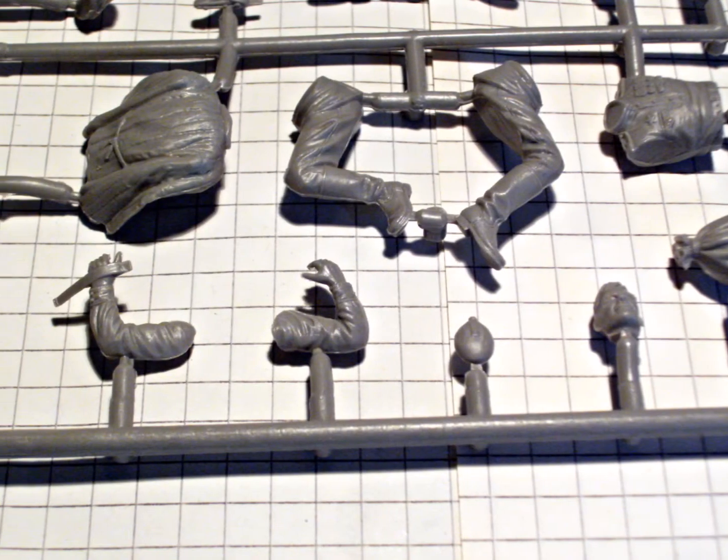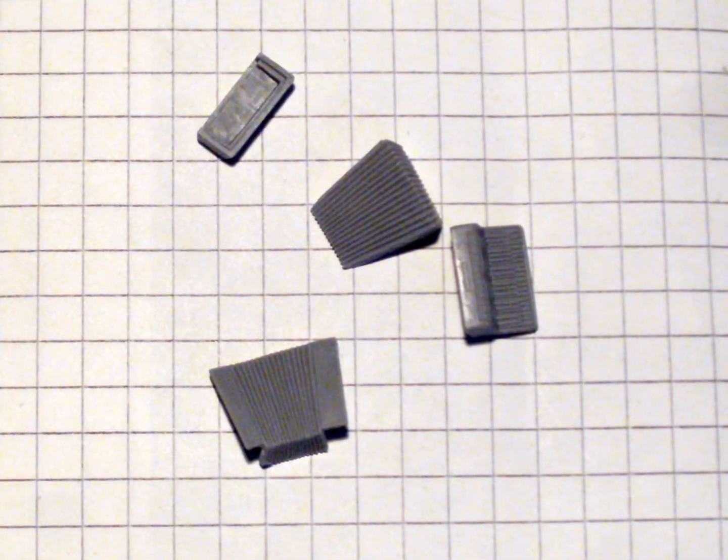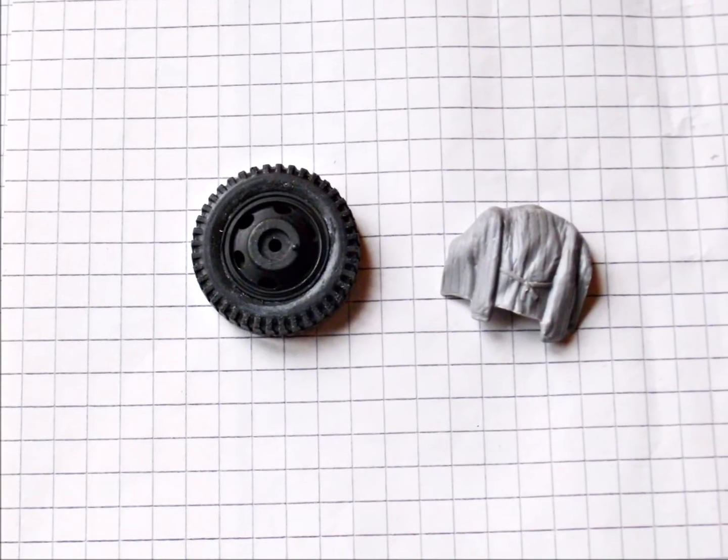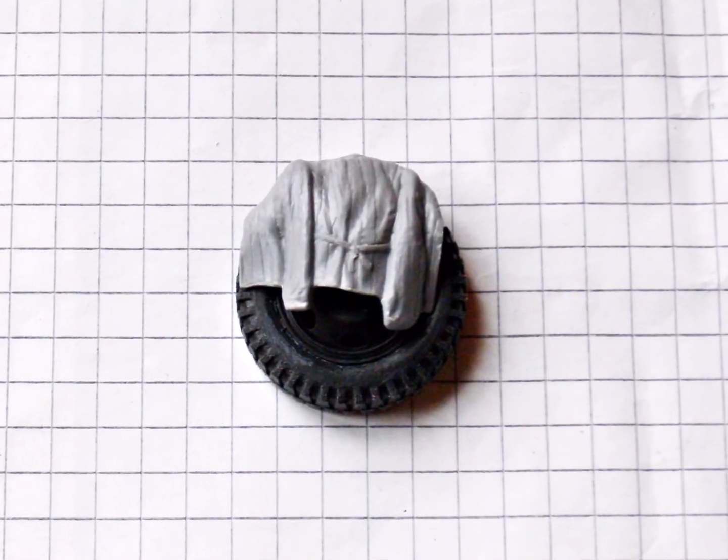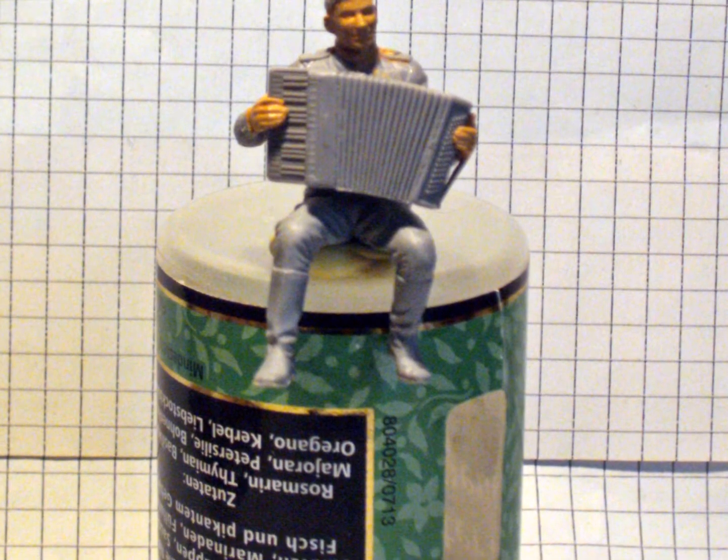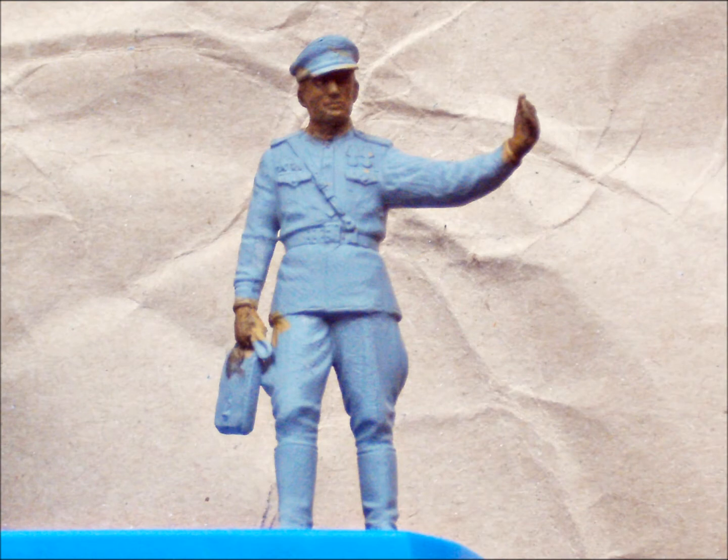First I built the accordion player. He should sit on the truck's step. He only fits there without his jacket, but I found a nice place for it. It'll be hanging over the spare wheel behind the cabin. The accordion fits exactly into his arms and hands. I really loved the ICM figures from the very beginning. Almost no filling was needed and all parts had an excellent fit.